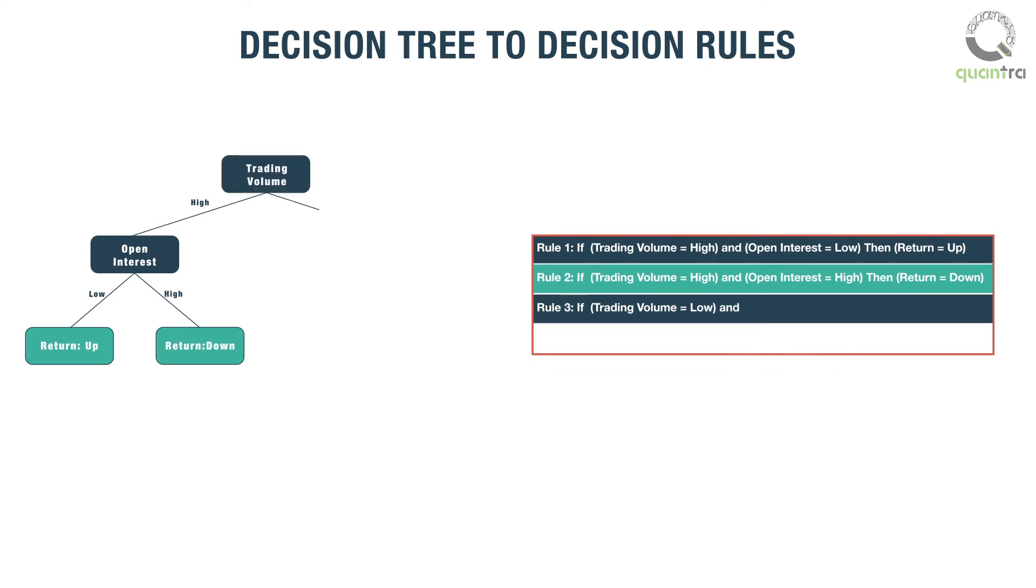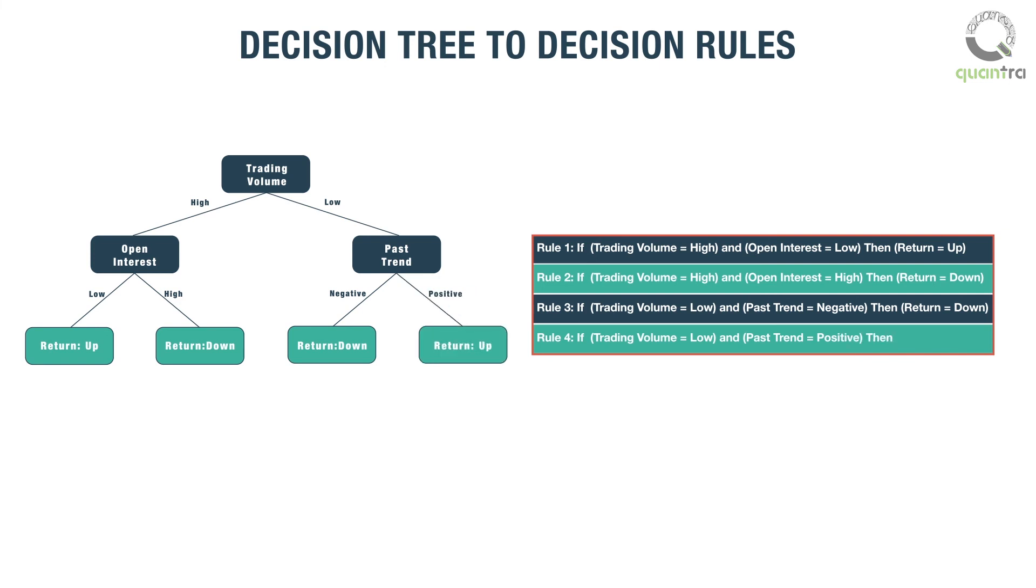If trading volume is low and the past trend is negative then the predicted return will belong to the down-class. Finally, if trading volume is low and the past trend is positive then the predicted return will belong to the up-class.